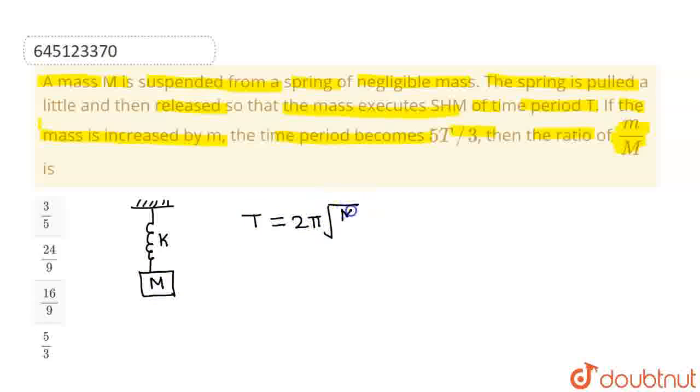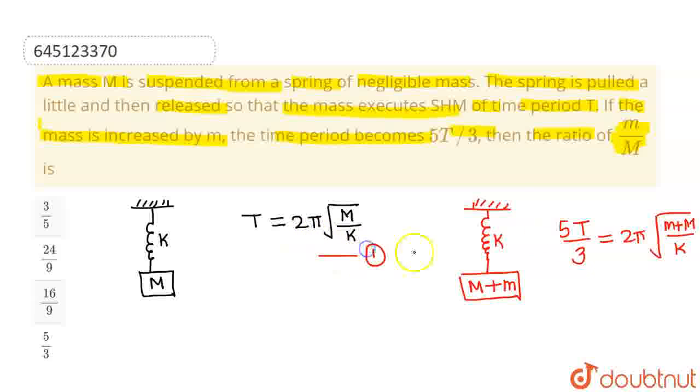Now, further, in the later case, with the same spring of force constant k, a block of mass capital M plus small m is attached. In this case, the time period is 5T/3 which is nothing but 2π√((m+M)/k). Let's say this particular equation is equation number 1 and this is equation number 2.